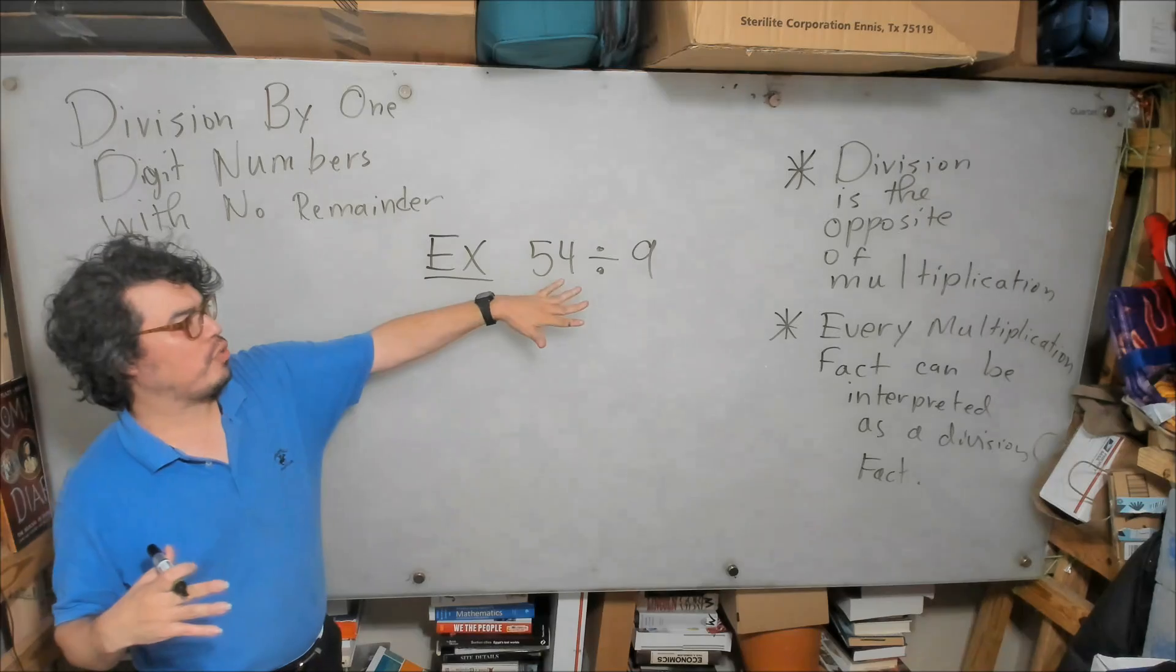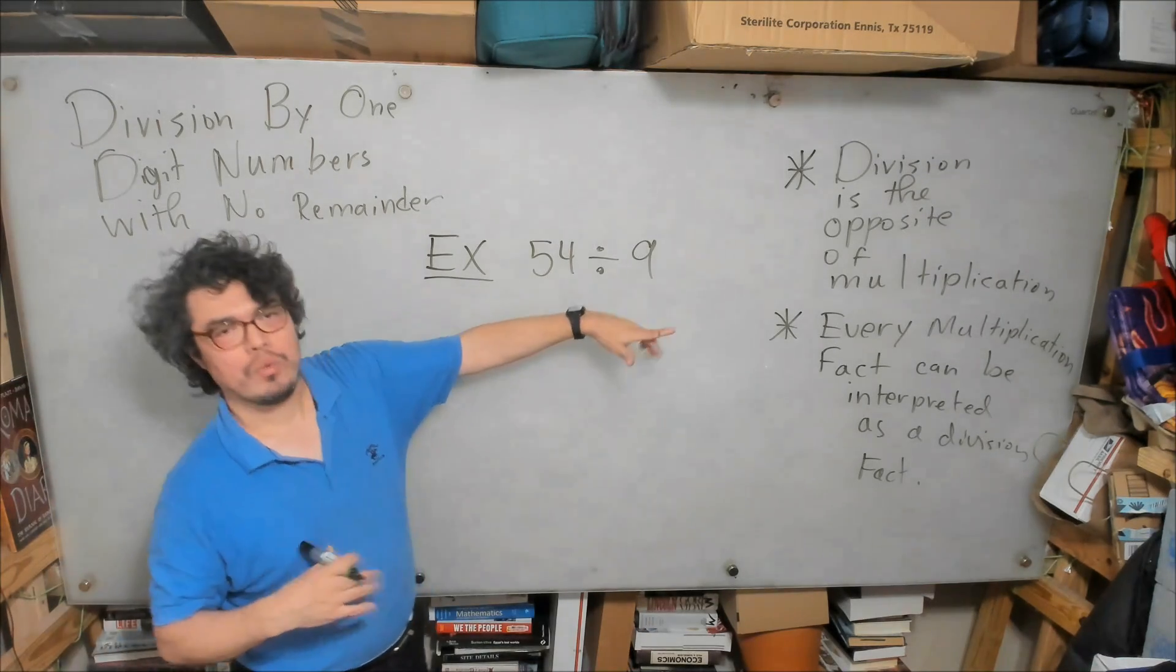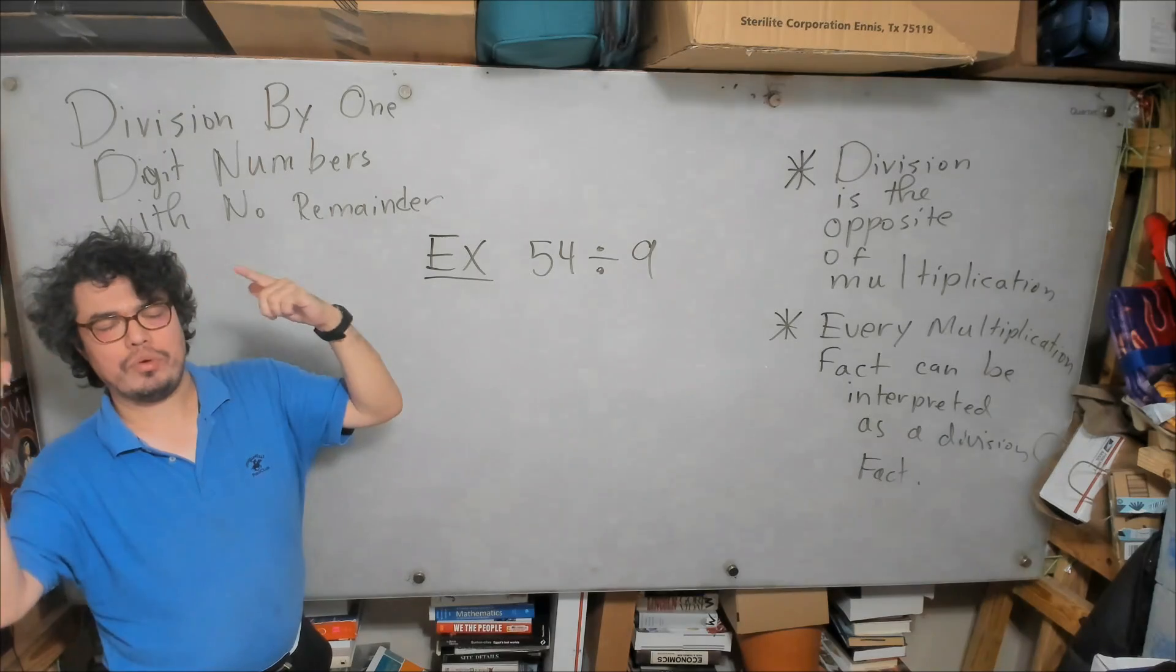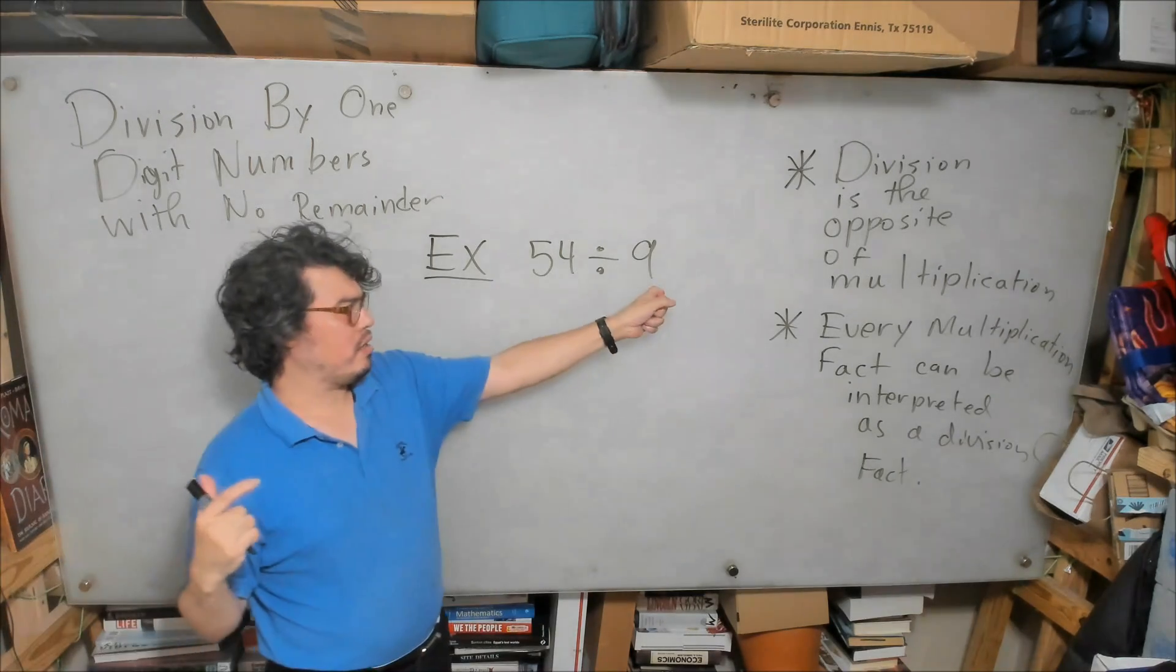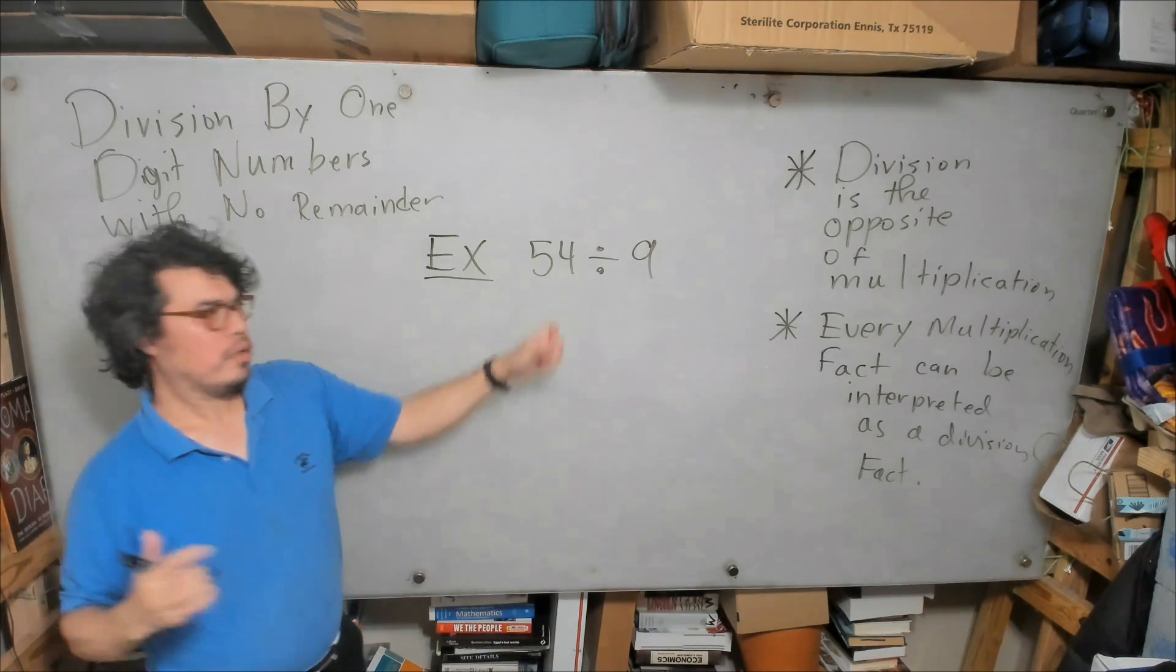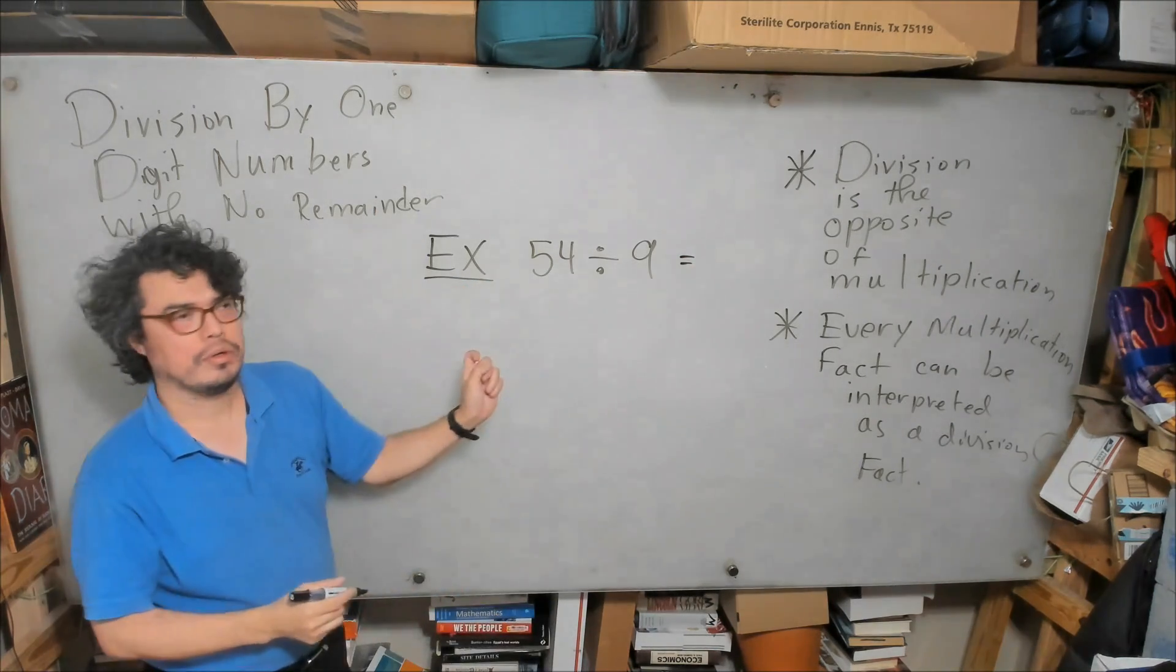So when we look at this question, what is 54 divided by 9, we can think to ourselves as a restatement of this question: what times 9 will give me 54? What times 9 will give me 54?